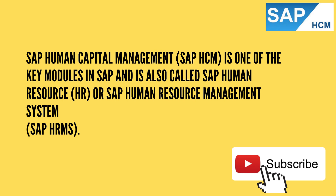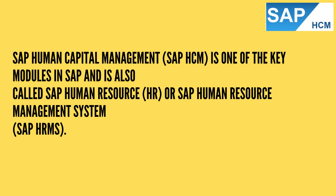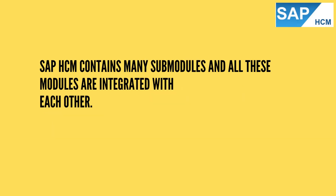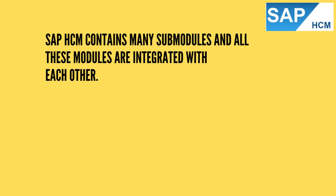SAP Human Capital Management, SAP HCM, is one of the key modules in SAP and is also called SAP Human Resource HR or SAP Human Resource Management System, SAP HRMS. SAP HCM contains many submodules and all these modules are integrated with each other. The key modules are as follows.